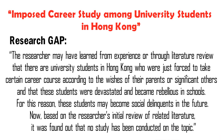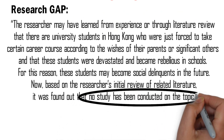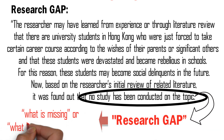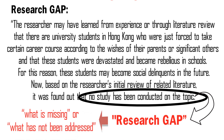And so as we can see, the problem is that there are university students in Hong Kong who were just forced to take a certain career course according to the wishes of their parents or significant others. As a result, these students have become devastated and rebellious, which in turn will make them social delinquents in the future. Also, there has been no study conducted on this topic in Hong Kong. This is exactly what we mean by a research gap — what is missing or what has not been addressed in the current state of knowledge in this field.